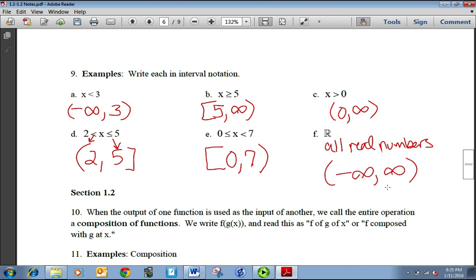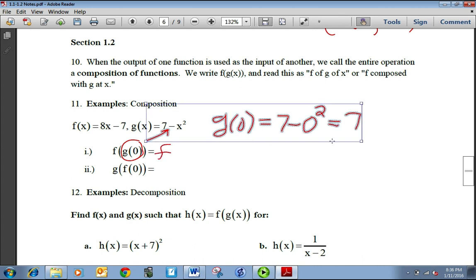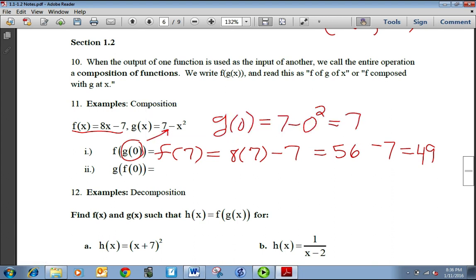Alright, 1.2 is composition of functions. You study this in pre-calc but I just want to review it a little bit because it's going to help us later on with derivatives. So if you compose two functions, you want to start with the inside first. So g of 0, if I plug 0 in for g, then I replace the x with a 0. And 7 minus 0 squared is just 7. So this, since g of 0 is 7, then this is really just f of 7. And f of 7 is going to be 8 times 7 minus 7. Because I'm just plugging 7 in for f of x. Well, that's equal to 56 minus 7. And that's going to be 49.